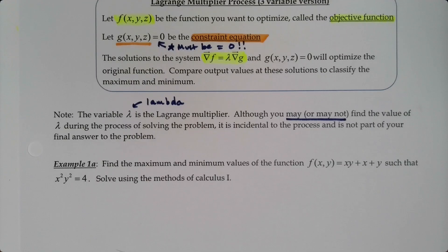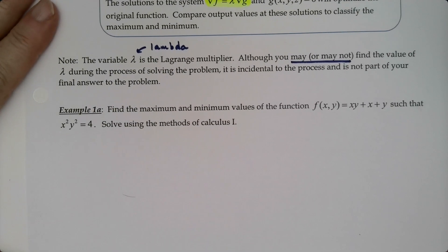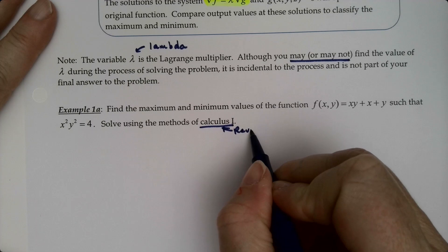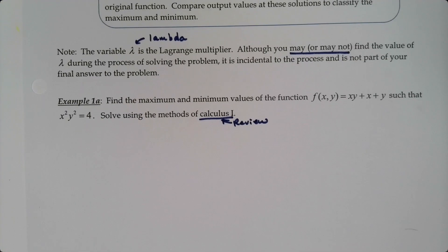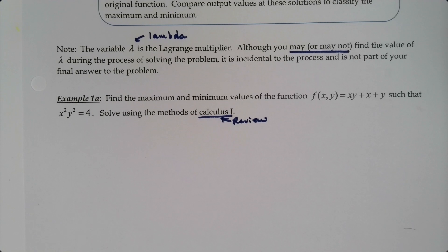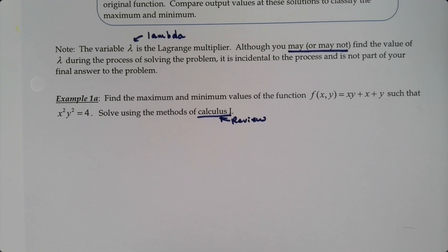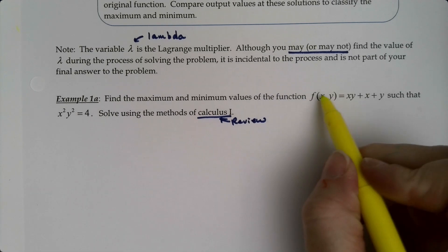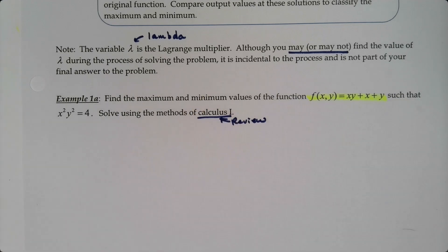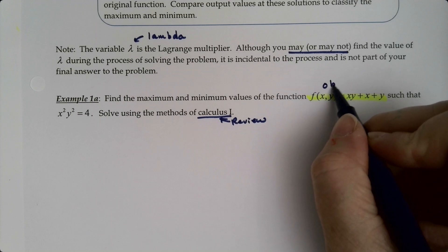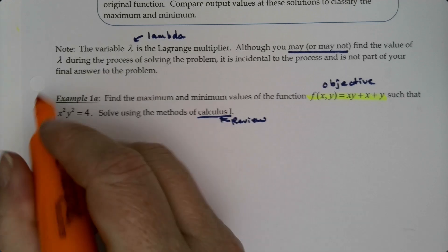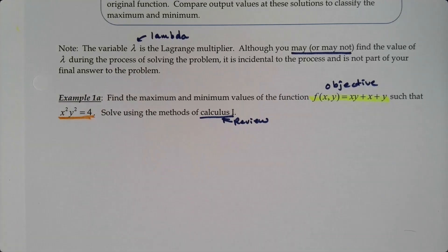This will all make sense when we do an example, but we're actually going to start with a review example using the methods of Calc 1 — doing it by hand the other way. We want to find the maxima and minimum values of f of xy equals xy plus x plus y, such that x squared times y squared equals 4. That's the objective function and the constraint we are working under.